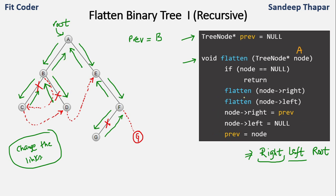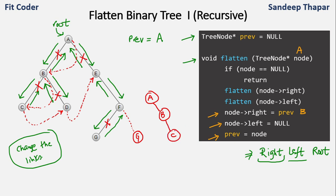The function call to B ends and we go back to A. We set right of A to B, so right of A points to node B, and left of A is set to null, breaking that link. Previous is set to node A, and the function terminates. If we redraw this tree: root A → right to B → right to C → right to D → right to E → right to F → right to G, with all left pointers null. This is the flattened version of the binary tree, solved in a bottom-up manner.